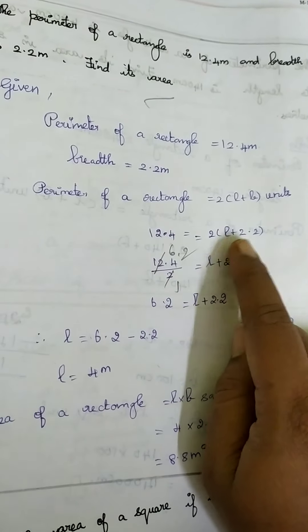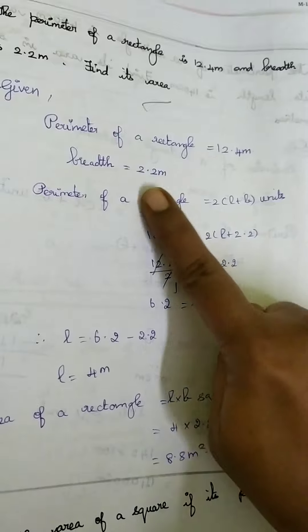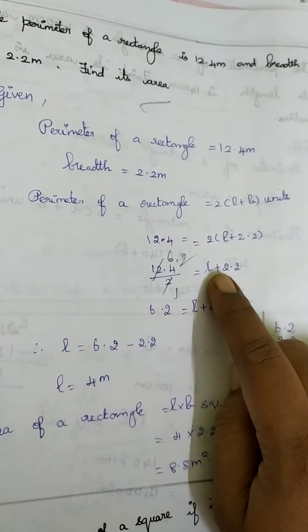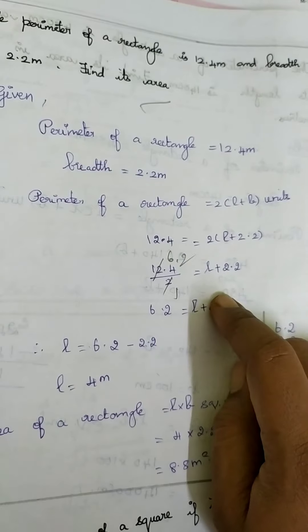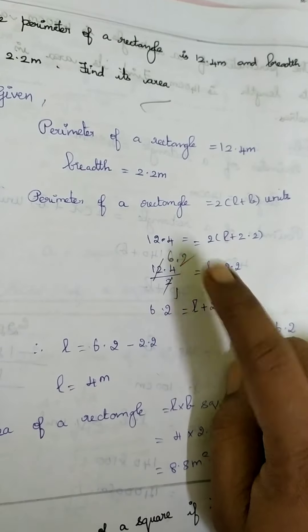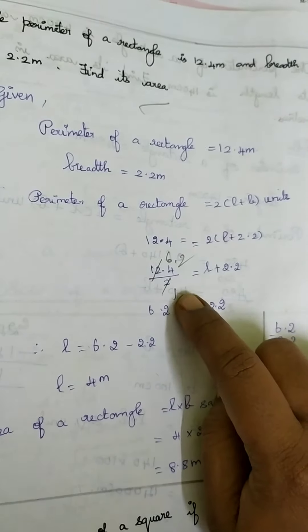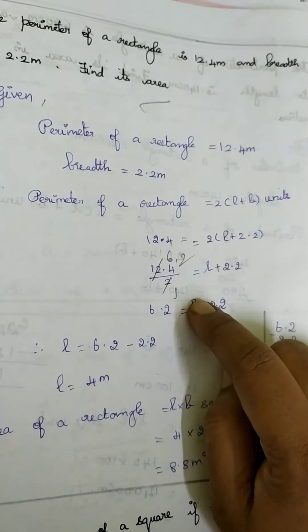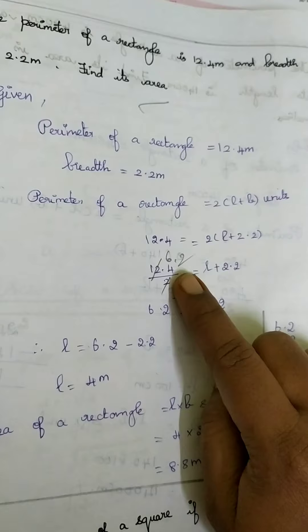Perimeter of a rectangle is equal to 2 into L plus B units. So perimeter we know it is 12.4 is equal to 2 into L plus breadth value is 2.2 and first step we will take 2 to the other side. So multiplication when it crosses equal to it will become division.